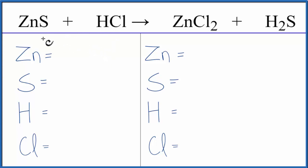Let's count the atoms up on each side of the equation. We have one zinc atom, one sulfur, one hydrogen, and one chlorine.